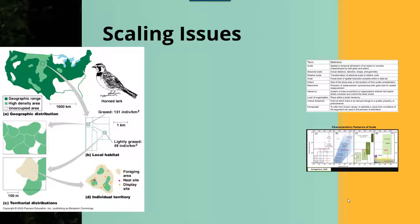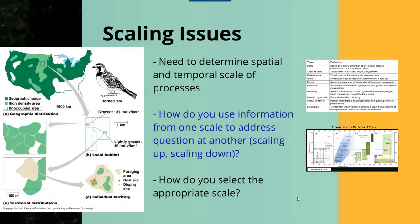Concepts of scale are really important to denote because of the fact that we can run into issues with scale if we are not determining an appropriate temporal scale of certain processes. For example, in the figure to the left we have a horned lark, and if we know the geographic range of the individual, we still need to break that down into the local habitat, the territorial habitat, and finally the individual territory to determine processes such as nest site and foraging area. You can use information from one scale to address questions at another, but there are issues of scaling up and scaling down that you need to be concerned with.